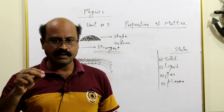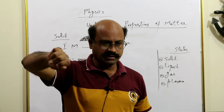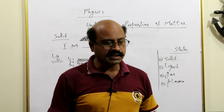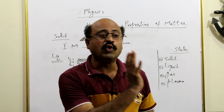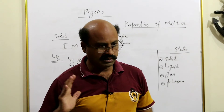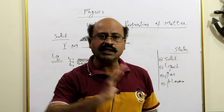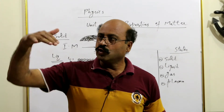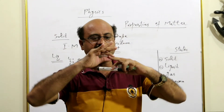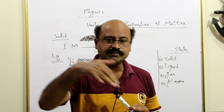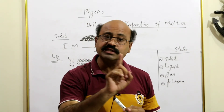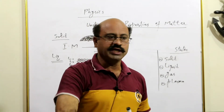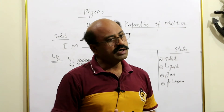Jitna un layers ke darmiyan interaction strong hogi, utna flow down hoga. Misal dete hain — agar paani ki jagah aap ne honey li hai. Honey cup mein li hui hai, aap cup ko ulta kar dein — kya woh yakdam gir jayega? Aahista aisa girega. Kyun? Honey is more viscous as compared to water — yani honey ki viscosity paani ki viscosity ki nisbat zyada hai, jis ki wajah se is ke darmiyan jo layers ki attraction hai woh strong hai. Is liye is mein flow hone ki ability utni zyada nahi. Lekin agar paani ka cup lein aur girayen, ek lamhe mein khali ho jayega.